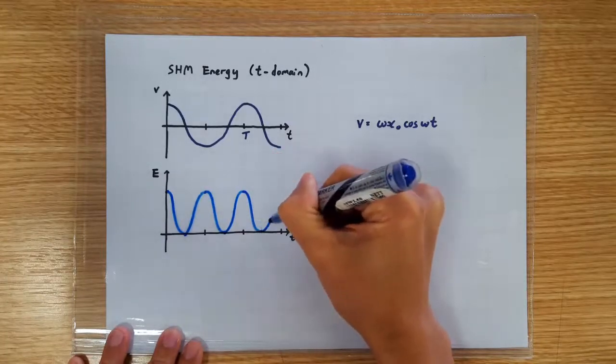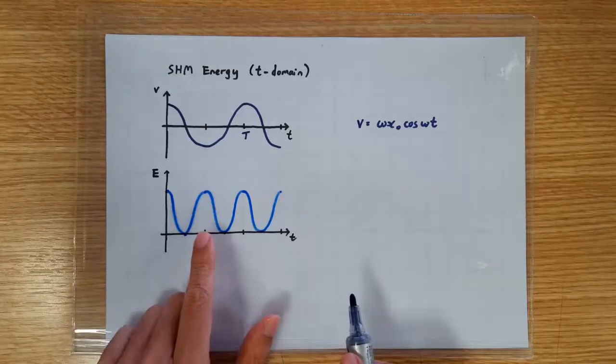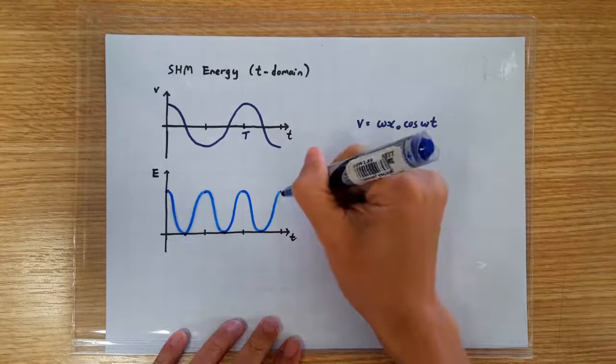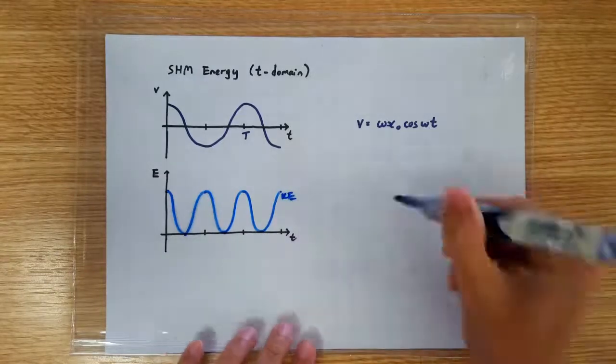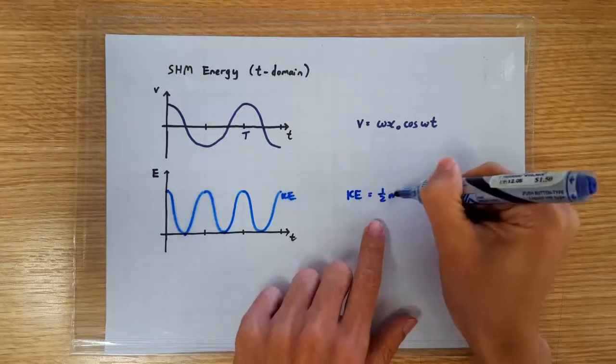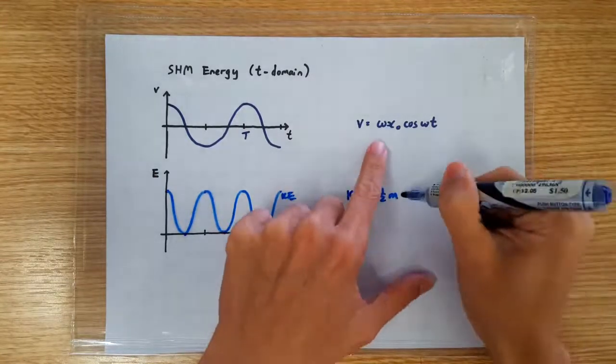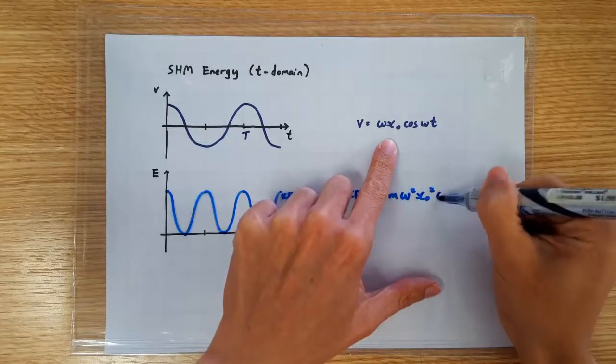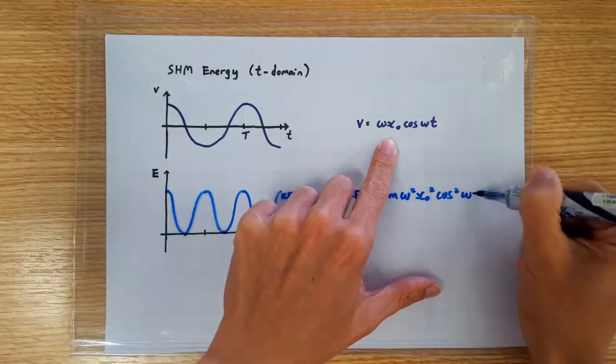In fact, we know the exact mathematical equation to describe this variation in KE. Remember, KE is half mv squared, right? So half m omega squared x naught squared cos squared omega t.